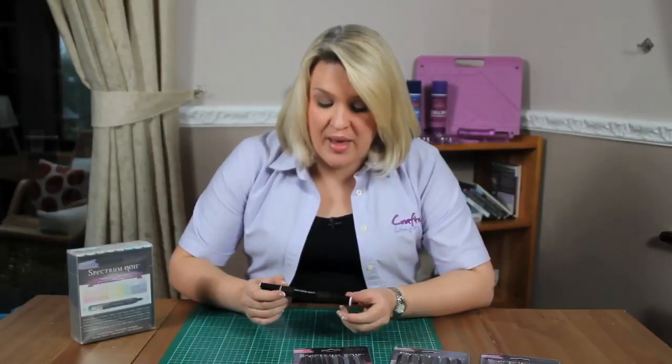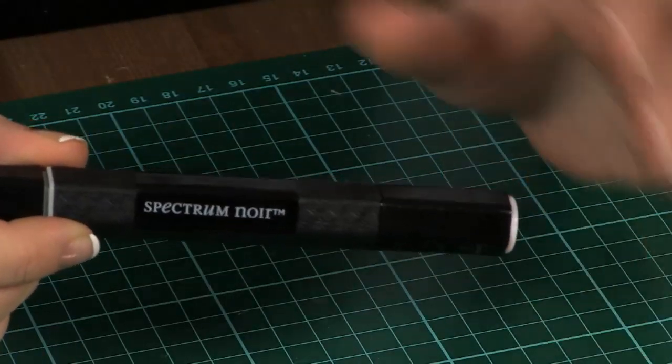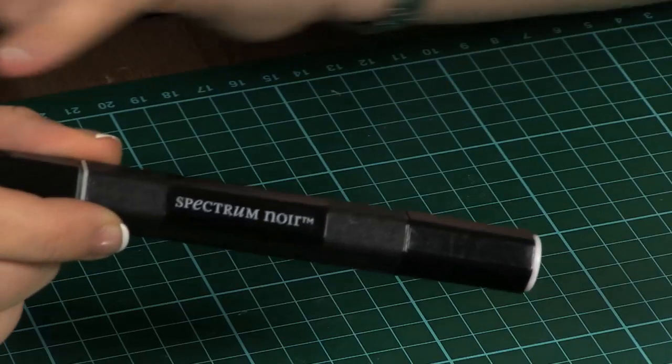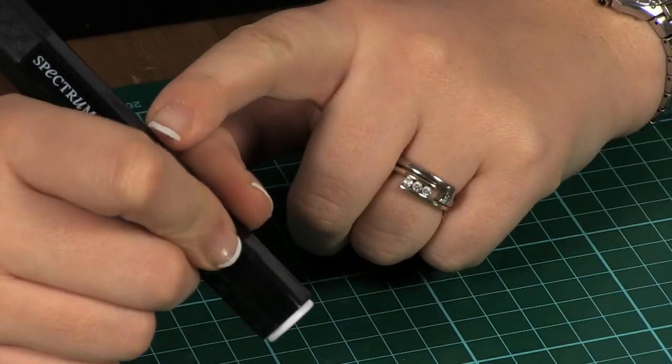So the changes we've made is you'll see we're now on a hexagonal barrel. Whereas we had a square barrel with the original markers, this is now a hexagonal barrel which is very ergonomic and easy to hold and color with.